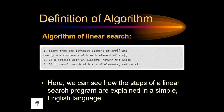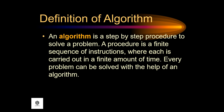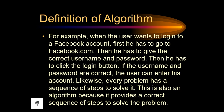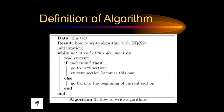Here we can see how the steps of a linear search program are explained in simple English language. An algorithm is a step-by-step procedure to solve a problem — a finite sequence of instructions carried out in a finite amount of time. Every problem can be solved with the help of an algorithm. For example, when the user wants to log into a Facebook account, first he has to go to facebook.com, then give the correct username and password, then click the login button. If the username and password are correct, the user can enter his account. Likewise, every problem has a sequence of steps to solve it, and this is also an algorithm.